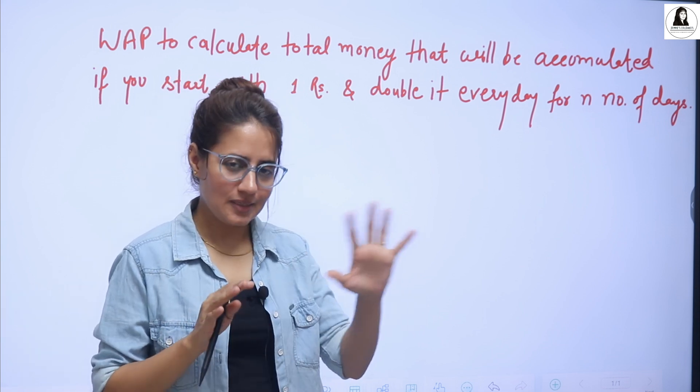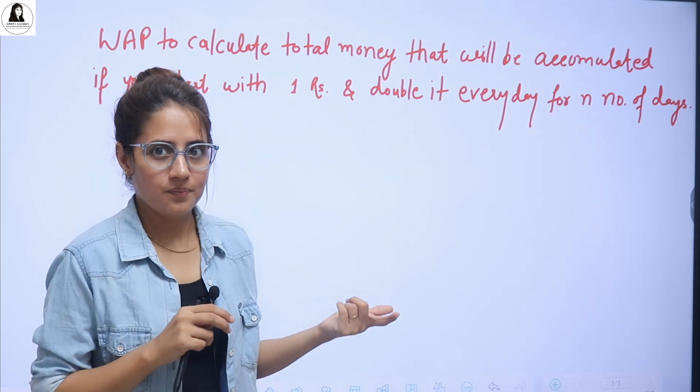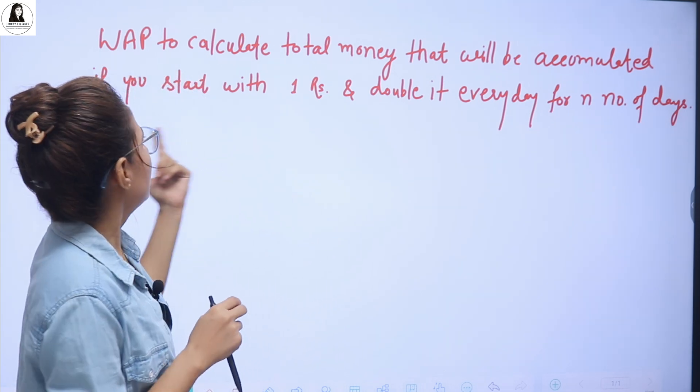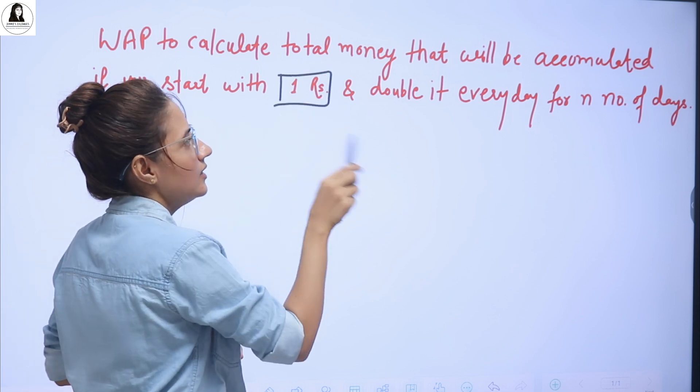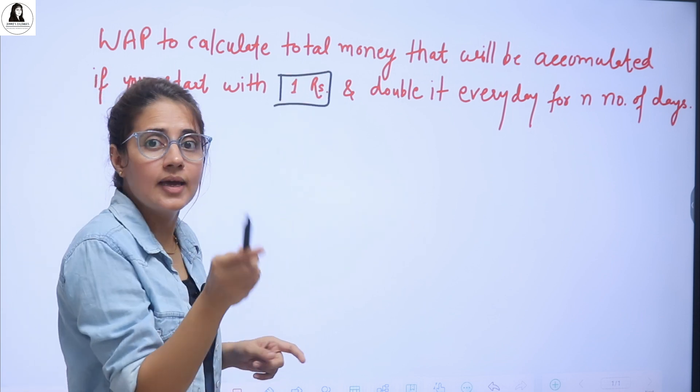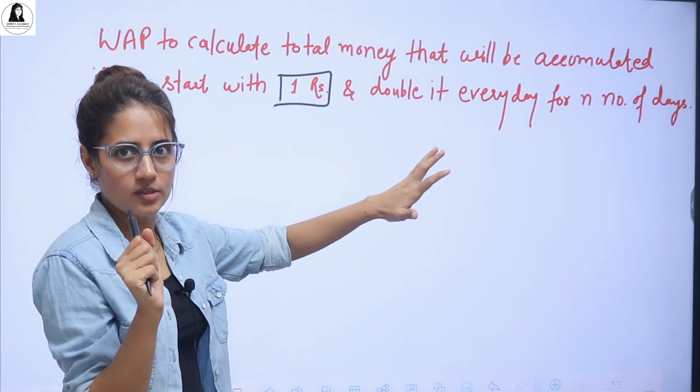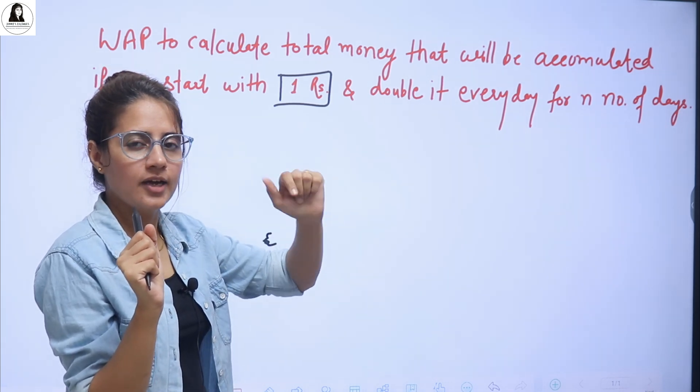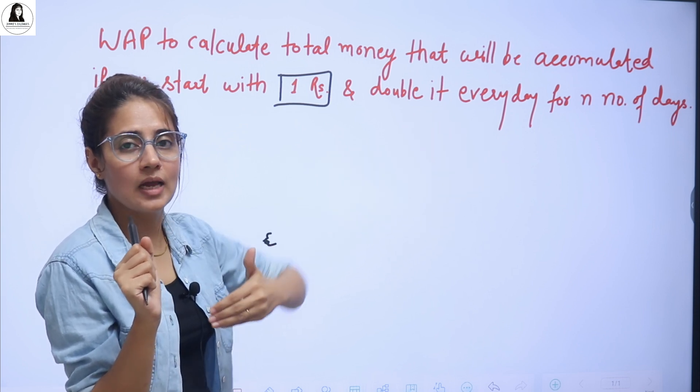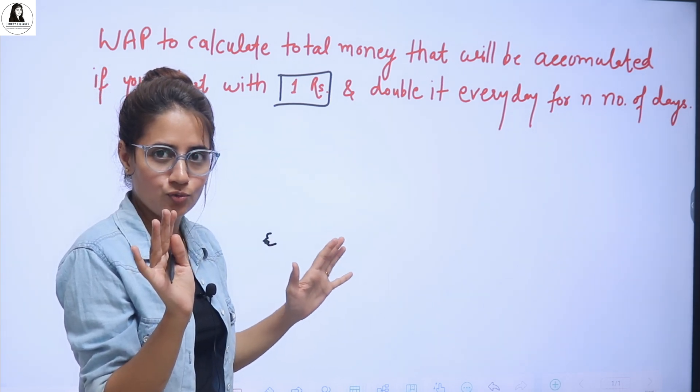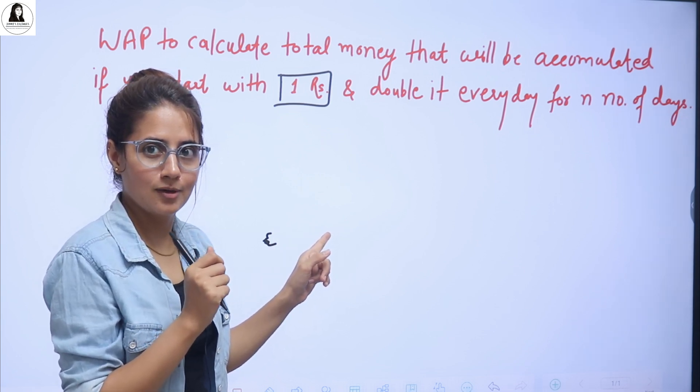So based on this, let's see one coding exercise. The exercise is you have to calculate the total amount of money that would be accumulated if you start with 1 rupee and double it every day for n number of days. This n number of days user will enter. At first day you have 1 rupee and that could be doubled for n number of days. So after n number of days, how much money you will have? This is the thing you need to calculate with recursive. Using recursive, you have to solve this exercise, right?